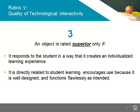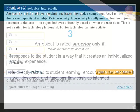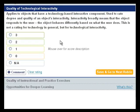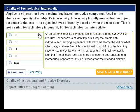An object should be rated superior, a 3 rating, for technological interactivity if it responds to the student in a way that creates an individualized learning experience. Also, it is directly related to student learning, encourages use because it is well designed, and functions flawlessly as intended.